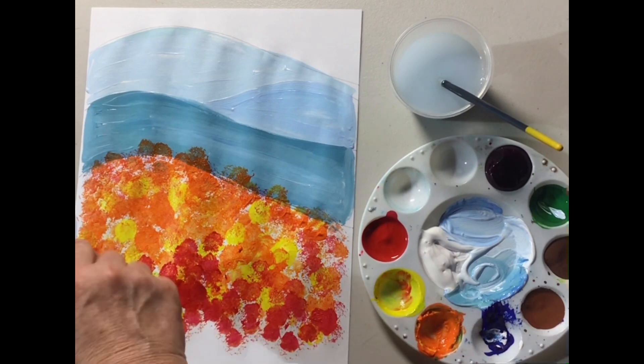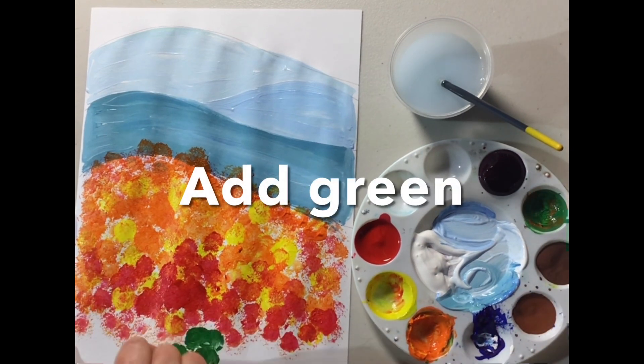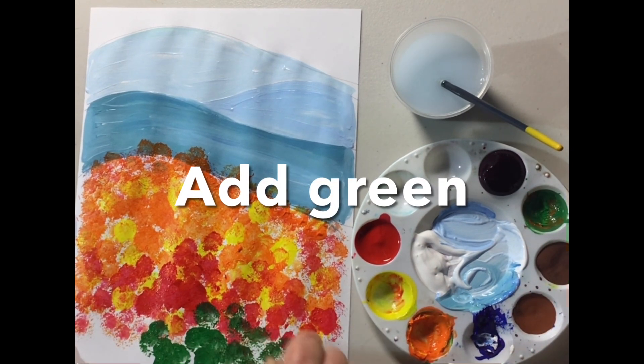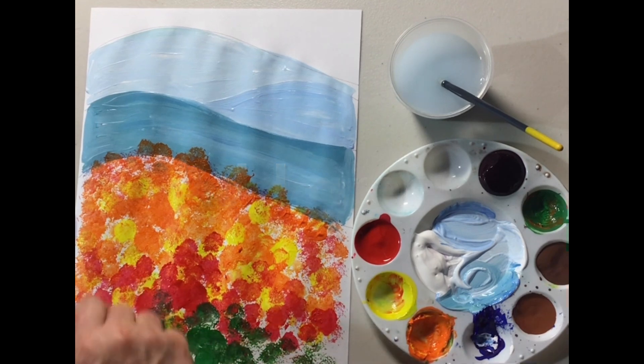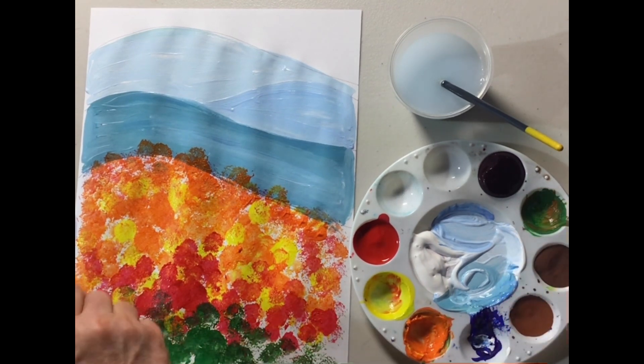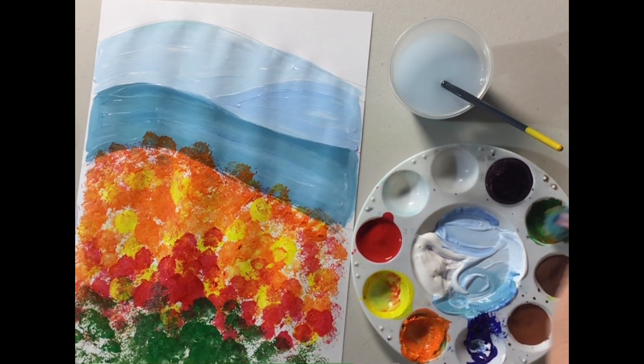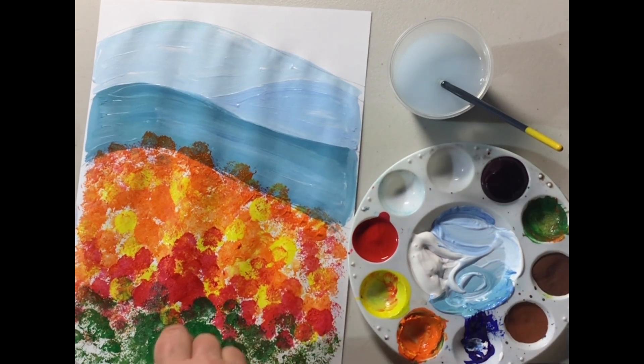When you're ready, go ahead and add some green. It might make brown and that's okay because some of the leaves have turned brown. I'm going to put the green down at the bottom of the page in the foreground.